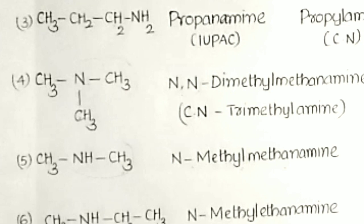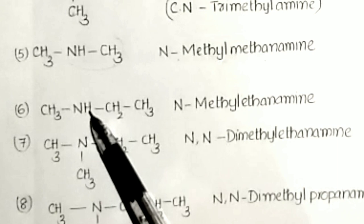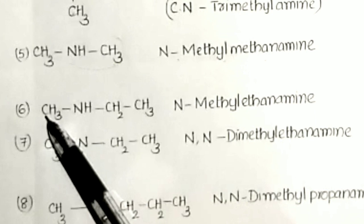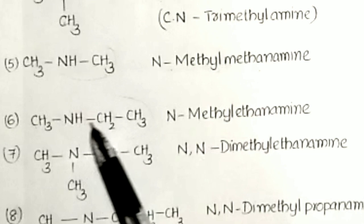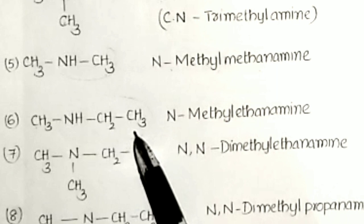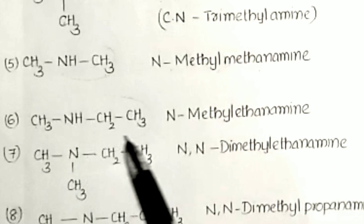For CH3NHCH2CH3, the nitrogen has a methyl group on one side and an ethyl group on the other. We select the longest continuous carbon chain containing nitrogen as the parent — that is the ethyl side with two carbons. The other methyl group becomes the substituent. So the IUPAC name is N-methyl ethanamine.